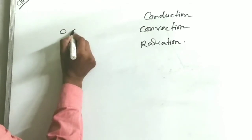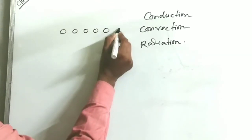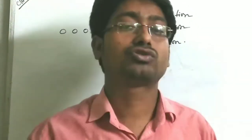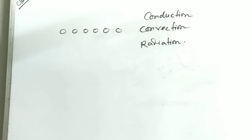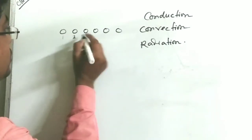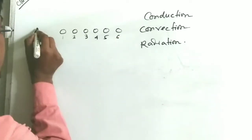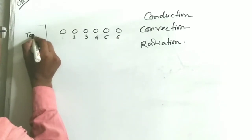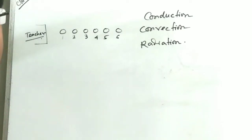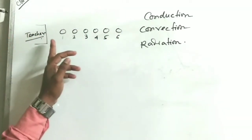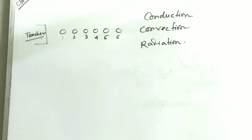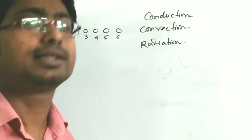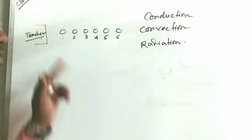To understand the three modes of heat transfer, we'll use an analogy with students. Suppose students are sitting one through six, and the teacher's desk is at the front. The teacher instructs that one book has to be transferred from the first student to the last student sitting in the last bench. There are six students in total.